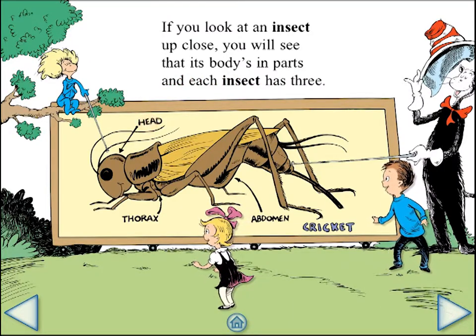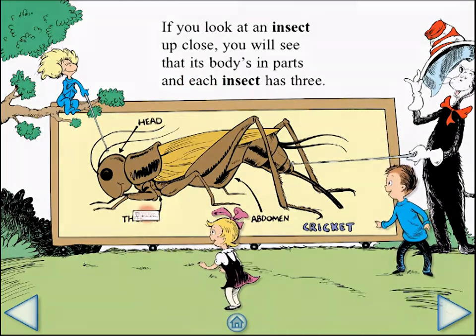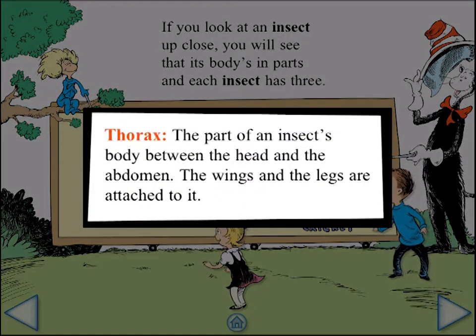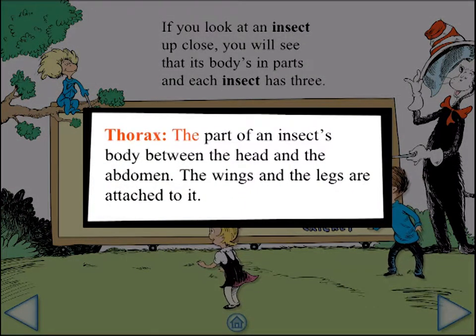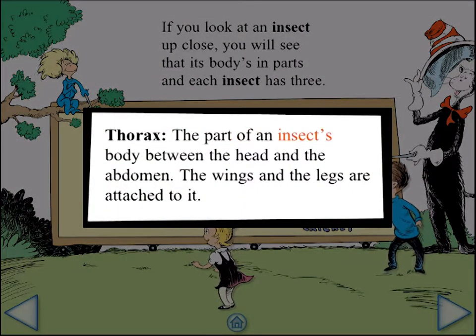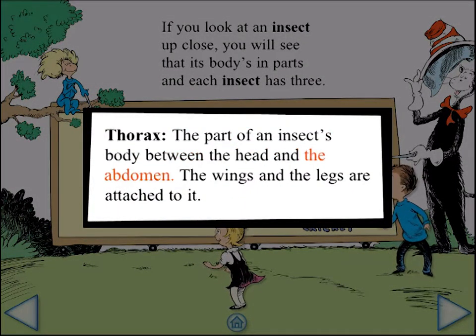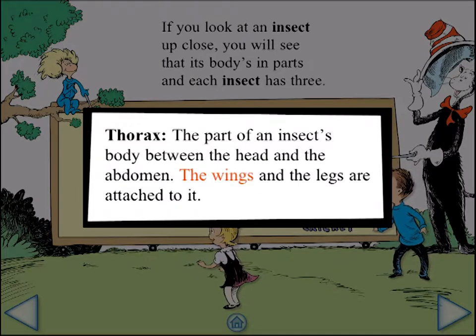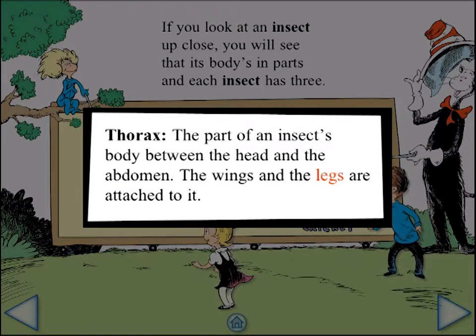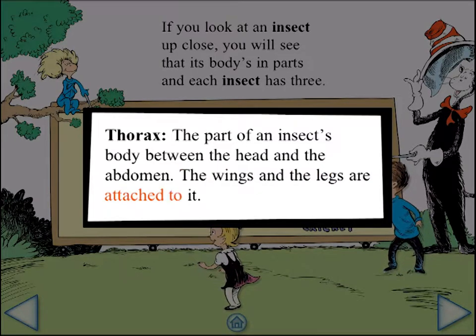Head. Thorax — the part of an insect's body between the head and the abdomen. The wings and the legs are attached to it.